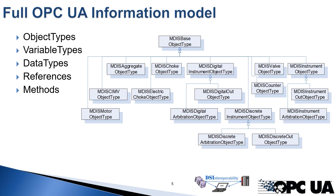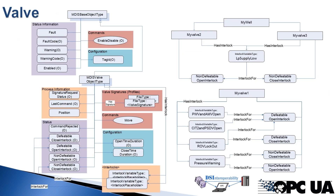MDIS provides a full information model. This includes support for object types, variable types, data types, and even methods that provide interaction between the objects. Some of the objects in MDIS are very customized to the subsea venue, such as a valve, which is a very slow, large object. It includes interlocking capabilities, signatures, and profile controls that are needed for judging if the valve motion is correct.